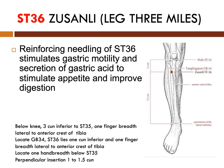The next point is Stomach 36. Stomach 36 can be used for both reinforcing and reducing method. We have already discussed how to locate this point previously. It is below the knee, 3 cun inferior to Stomach 35, one finger-breadth lateral to the inferior crest of the tibia. To locate it, first find GB34, then Stomach 36 lies one cun inferior and one finger-breadth lateral to the inferior crest of the tibia, one hand-breadth below Stomach 35. Needling is perpendicular insertion, 1 to 1.5 cun.